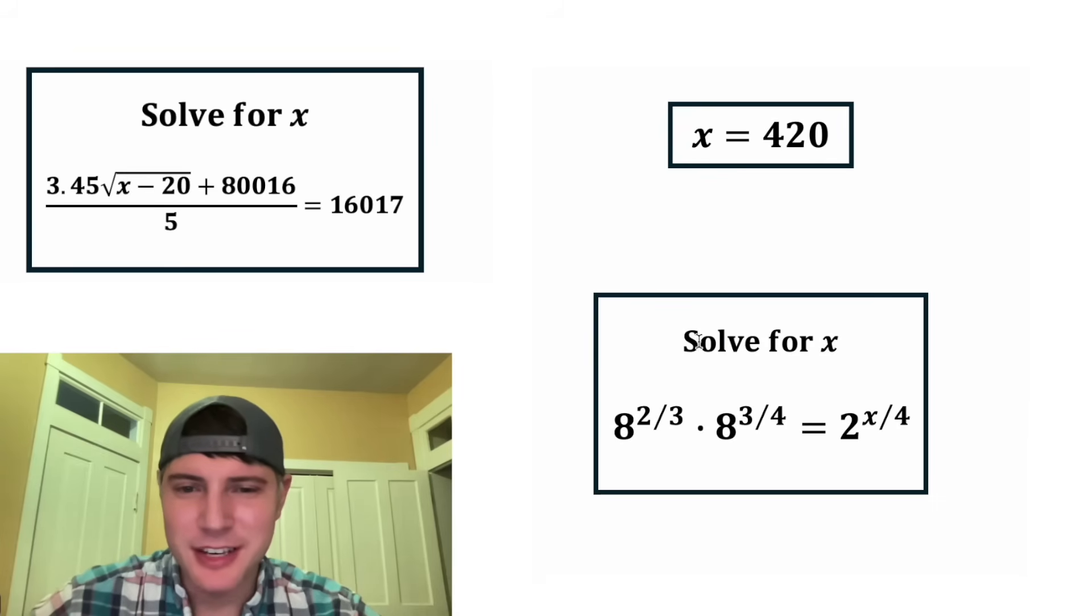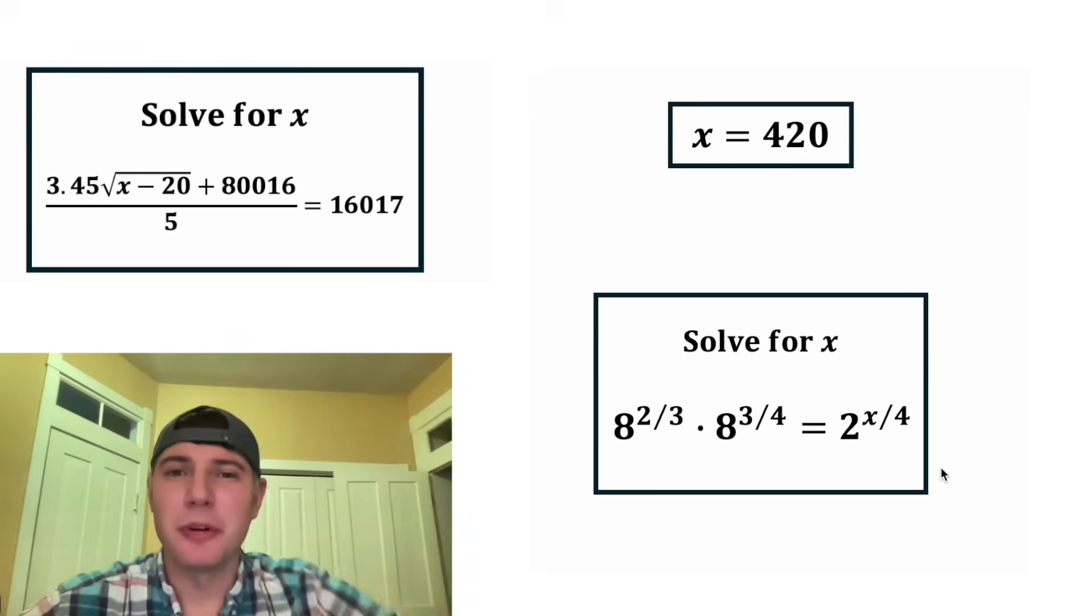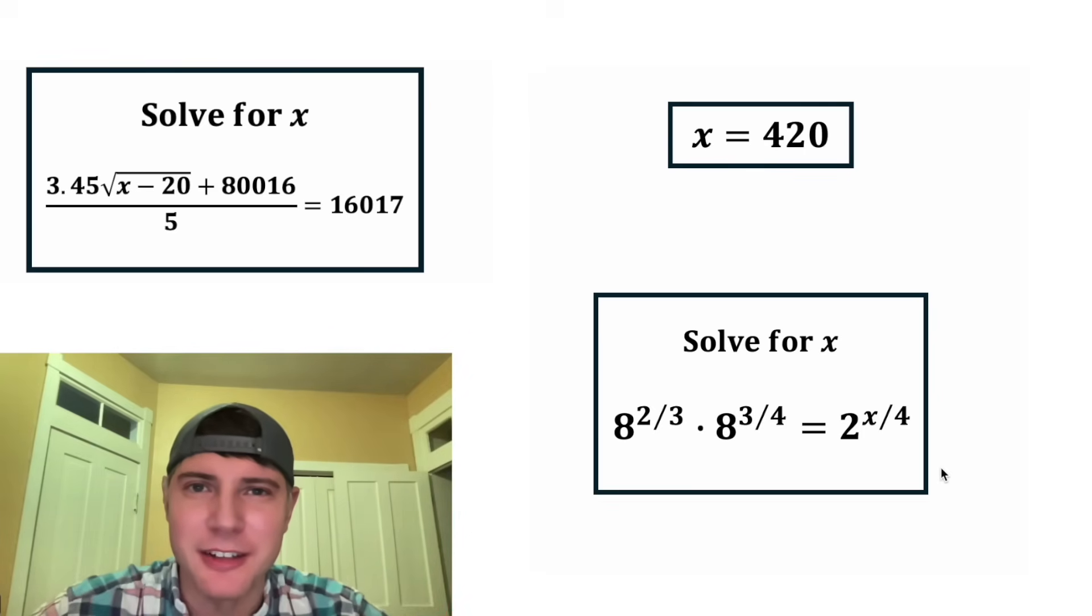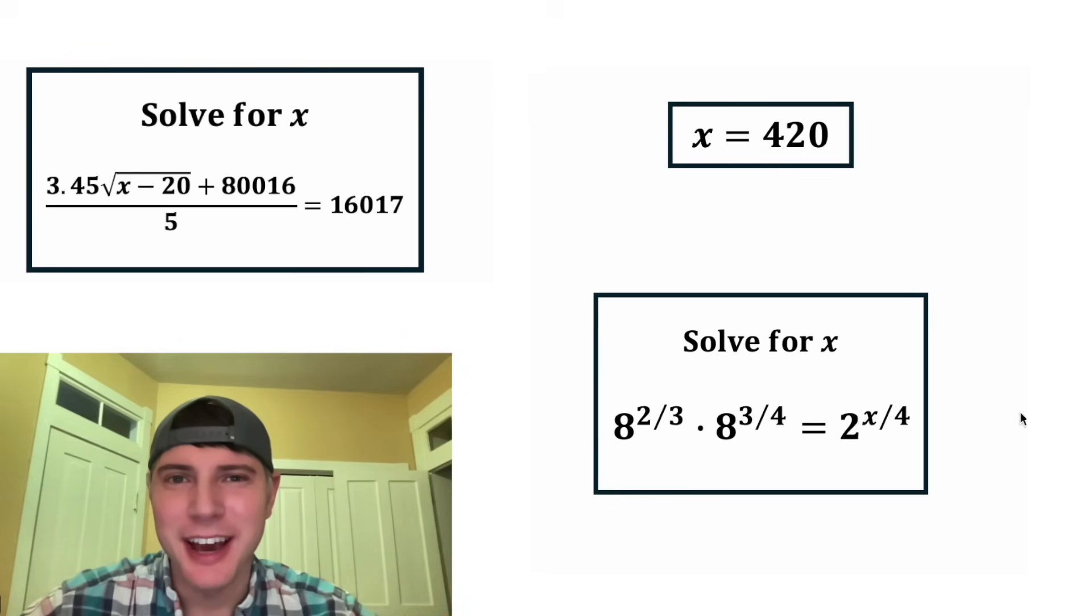And here's day two. It says solve for x. It's eight to the power of 2 thirds times eight to the power of 3 fourths equals two to the power of x over four. And it wants us to solve for x. Oh, and in the description, I'll put a link to the Algebra February calendar. This will be a fun month. How exciting.